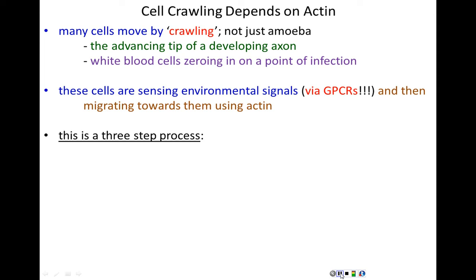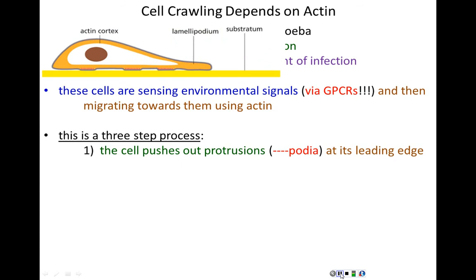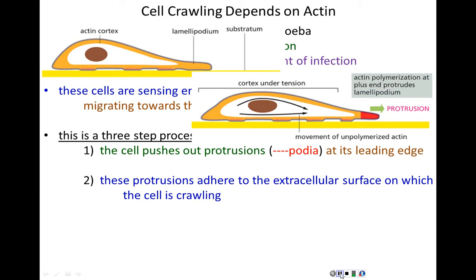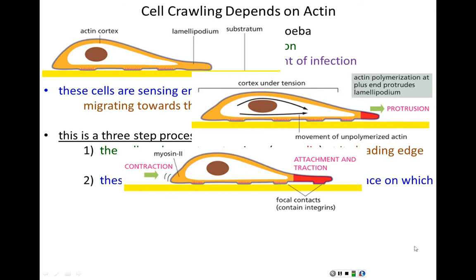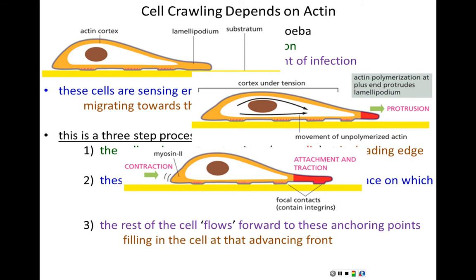Cell crawling is a three-step process. First, the cell pushes out protrusions — these podia — at the leading edge, the edge by which the cell is crawling. Then, once those protrusions have been sent out, the cellular membrane needs to adhere to whatever surface the cell is crawling on — that's an anchoring point that keeps the cell from retracting backwards. The third step is that the rest of the cell needs to follow and bring up the rear, flowing forward to the anchoring point and filling in the advancing front, then the process repeats.